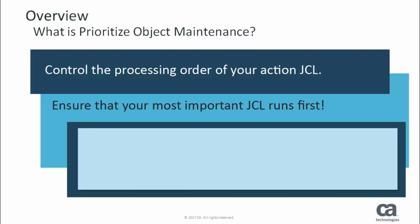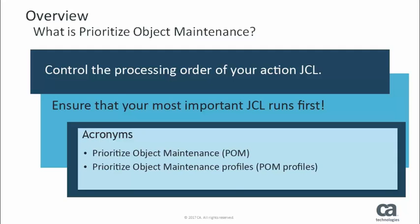There are three acronyms that you'll become familiar with over the course of this video. The first acronym is simply POM, referring to the overall Prioritize Object Maintenance feature. Next, we've got POM profiles, which refers to Prioritize Object Maintenance profiles. You create these profiles, and the profiles contain the Prioritize Object Conditions, which we refer to as POCs. The POCs contain the criteria used to prioritize the objects that require maintenance.